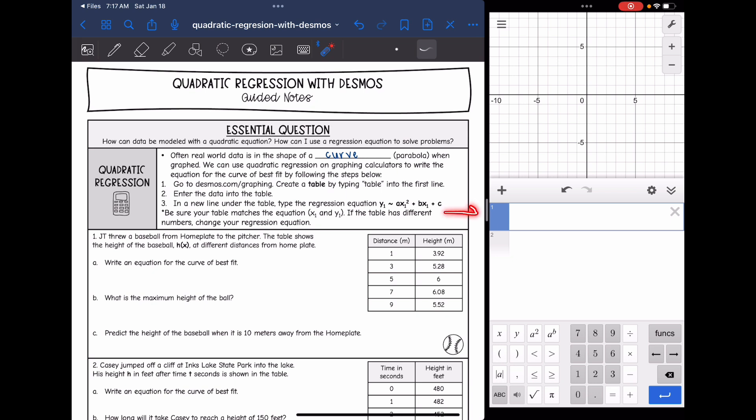So I have the Desmos graphing app pulled up on my iPad, but you can also go to desmos.com/graphing. So pull up that graphing calculator. And then the first thing we need to do is create a table by typing table into the first line on Desmos.